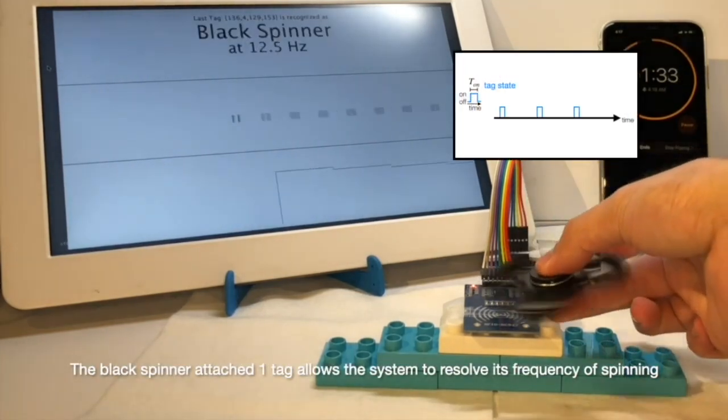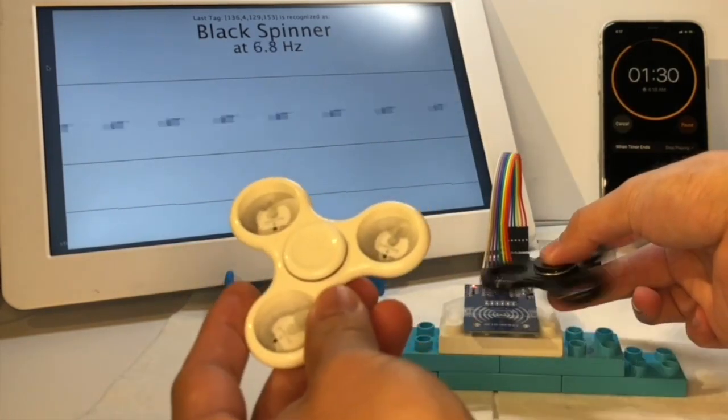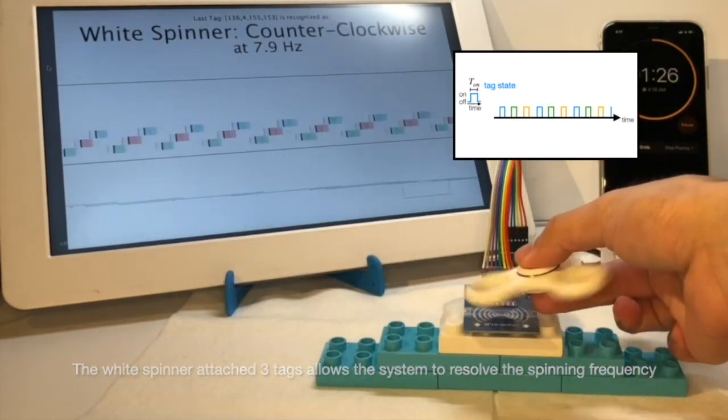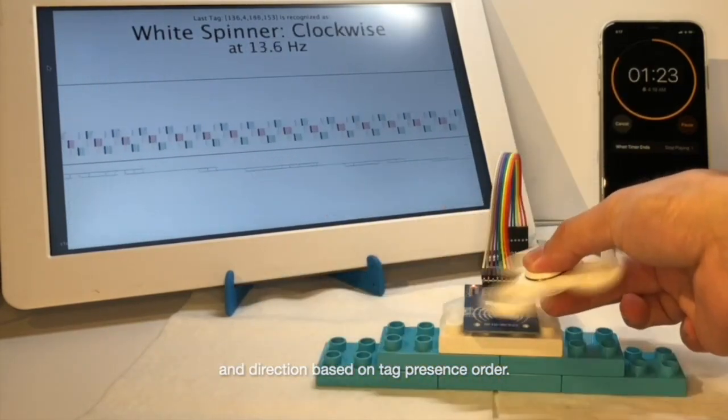A black spinner attached one tag, allowing the system to resolve its frequency of spinning. A white spinner with three tags allows the system to resolve the spinning frequency and direction based on the tag presence order.